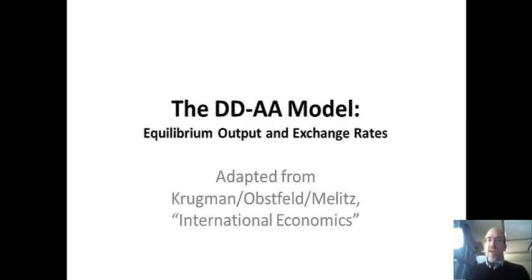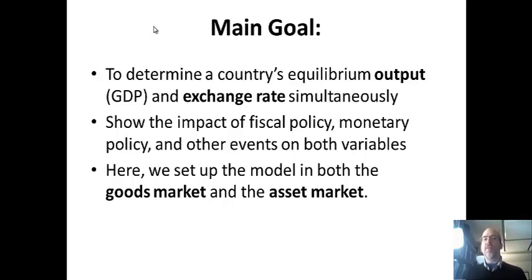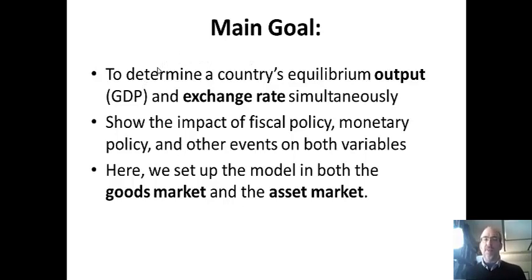The main goal is to determine a country's equilibrium output, or GDP, and exchange rates simultaneously. It's going to have two axes: the vertical axis is the exchange rate of the home country in terms of a foreign currency, and the horizontal axis is output or GDP. Shifts in the model will show how these variables can change due to different policies and other outcomes.